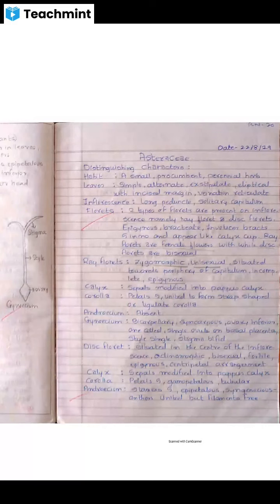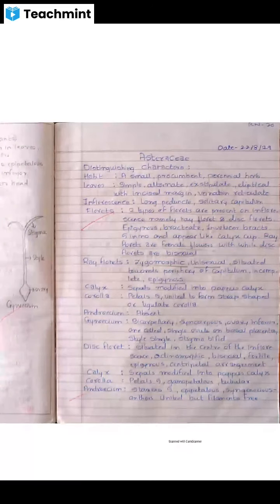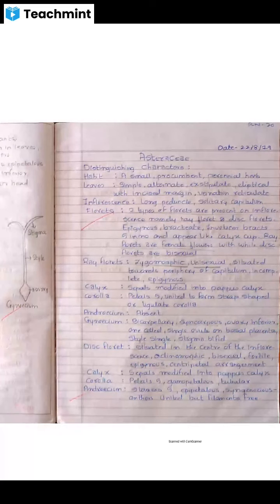Ray florets are incomplete and epigynous, situated towards the periphery of the capitulum. Calyx: sepals are modified into a pappus calyx. Corolla: five petals united to form a strap shape — called a ligulate corolla, which is an irregular type of corolla and is gamopetalous.